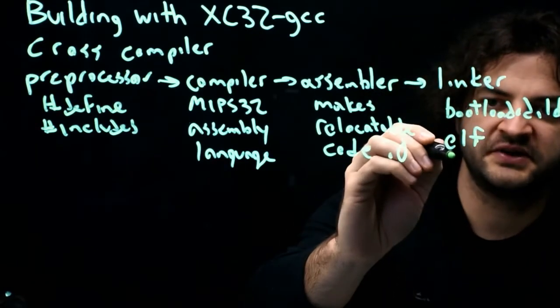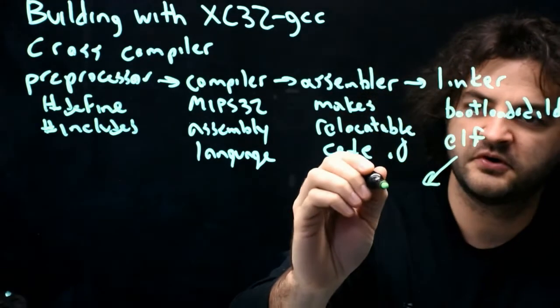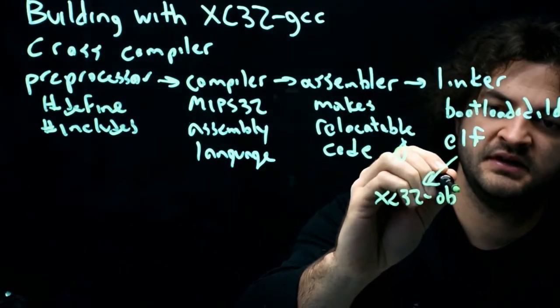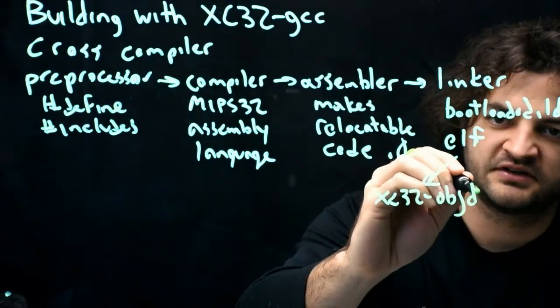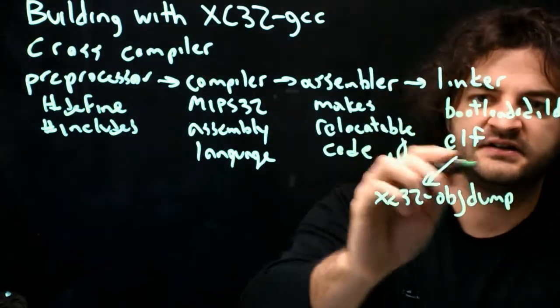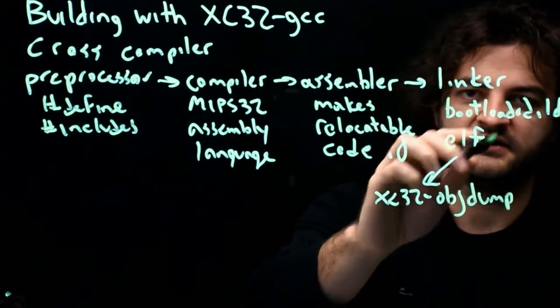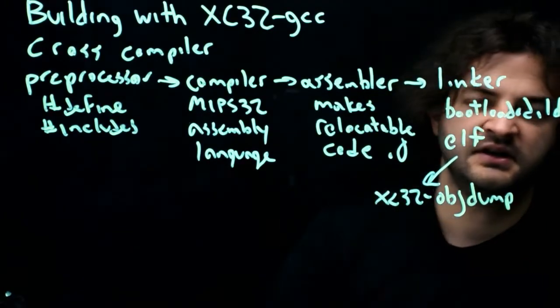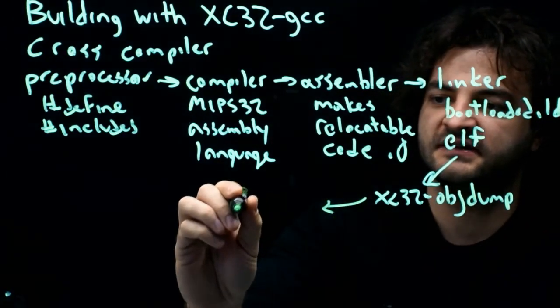But one interesting thing we can do with the ELF is we can send it to a program called xc32-obj-dump, object-dump. And what that does is it undoes the binariness of the file. So this code looks a lot like object code. It's just been given final addresses in memory. And it turns it back into what we call the disassembly.